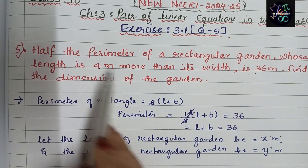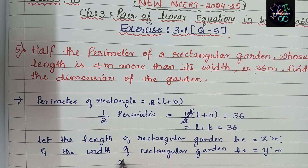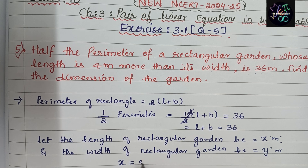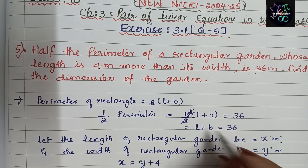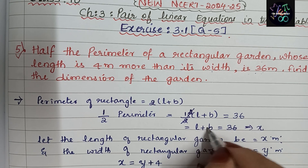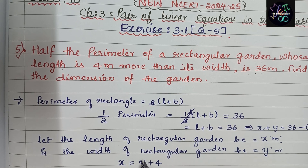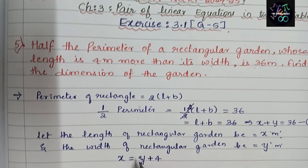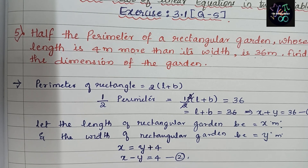As per the question, the length is 4 more than its width. So length x equals y plus 4, which gives us x minus y equals 4 — this is Equation 2. And from before, length plus breadth: x plus y equals 36 — this is Equation 1. Writing in standard form: x plus y = 36 and x minus y = 4.